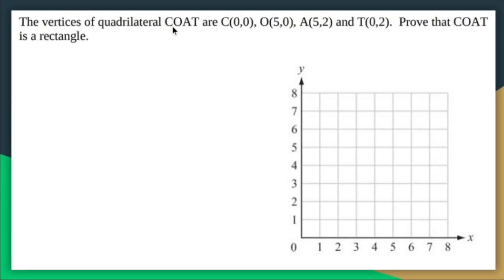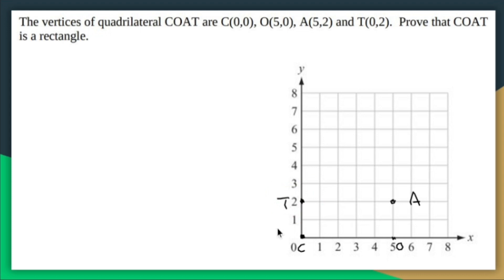The vertices of quadrilateral COAT are C (0, 0), O (5, 0), A (5, 2), and T (0, 2). Prove that COAT is a rectangle. I have a picture here. In order for something to be a rectangle, we need to show two main things: number one, opposite sides are congruent, and number two, all four angles are 90 degrees.